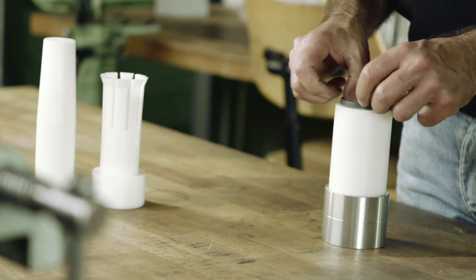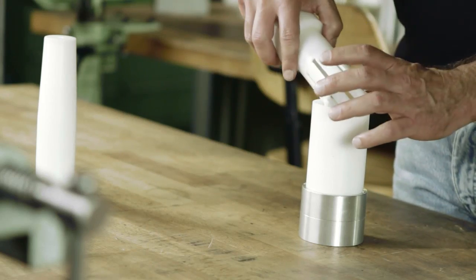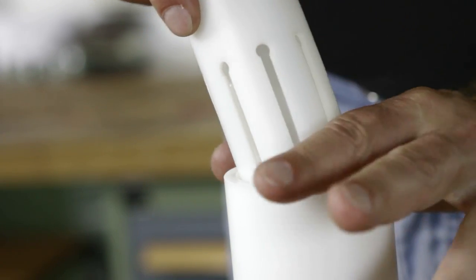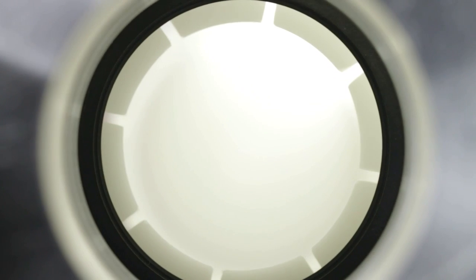Insert the turcon rod seal into the assembly cone. Position the pusher tool above the seal. Push the seal slowly through the assembly cone until the pusher is at the stop point. The turcon rod seal snaps into the groove.